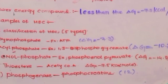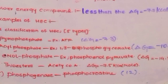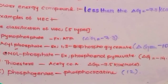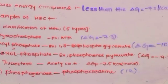Next, thioester. Example: acetyl-CoA. Its delta G value is ΔG = -7.5 kilocalories per mole.